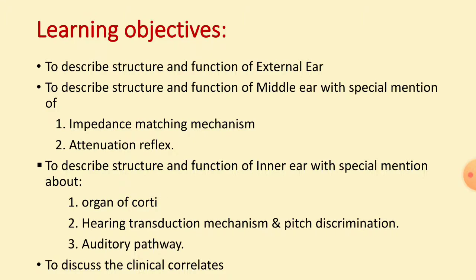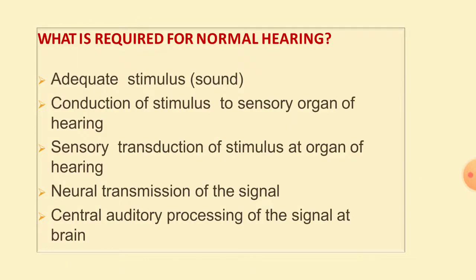Throughout this session on hearing physiology, we will learn the structure and function of different parts of the ear — that is external ear, middle ear, and inner ear — along with their clinical correlates. We will have a special discussion about impedance matching mechanism, attenuation reflex, the structure and function of the organ of Corti, hearing transduction mechanism, mechanism for pitch discrimination, auditory pathway, and different clinical conditions associated with hearing physiology.